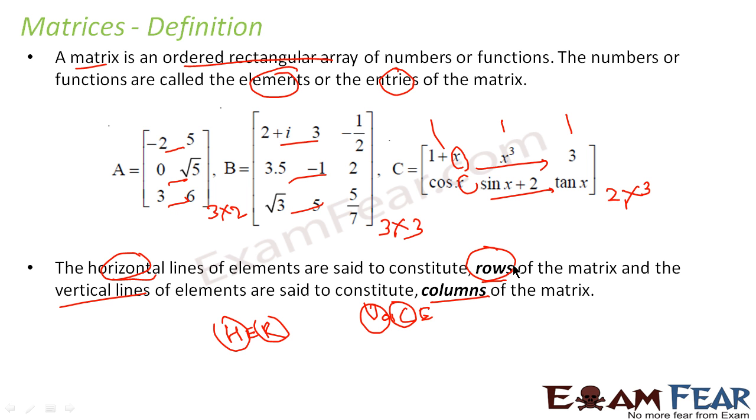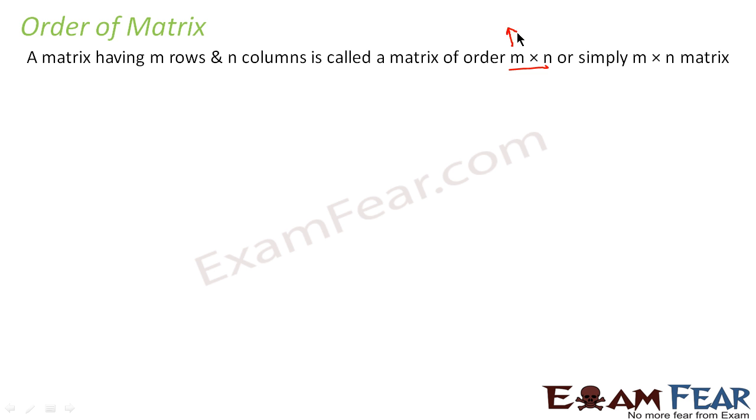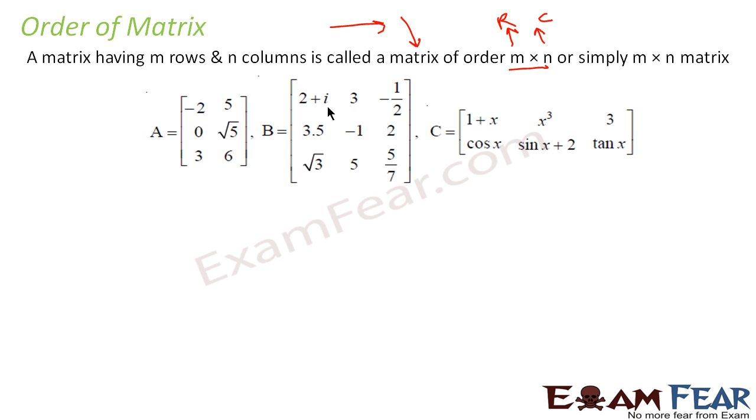So if you have not understood what is order, let me introduce order once again. A matrix having m rows and n columns is called matrix of order m into n. Please note, row comes first and the columns come next. Why row comes first? Because first we learn how to walk horizontally. Once we are done with the horizontal walking, then only we walk up or down.